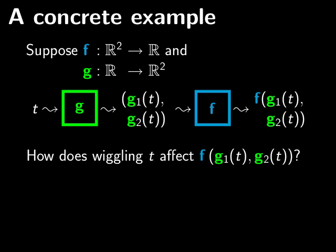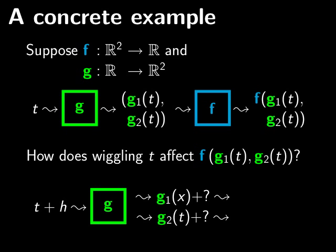Now just like before, the question is how does wiggling the input t affect the output, which is f of g of t? We want to know what the derivative is. So again, we start with t and wiggle it a little bit by adding a small number h. This gets plugged into g, and we get these two outputs, slightly wiggled versions of g_1 of x and g_2 of x. These then are going to be plugged into the function f. And the output is some real number, and this is what we want to try to understand.